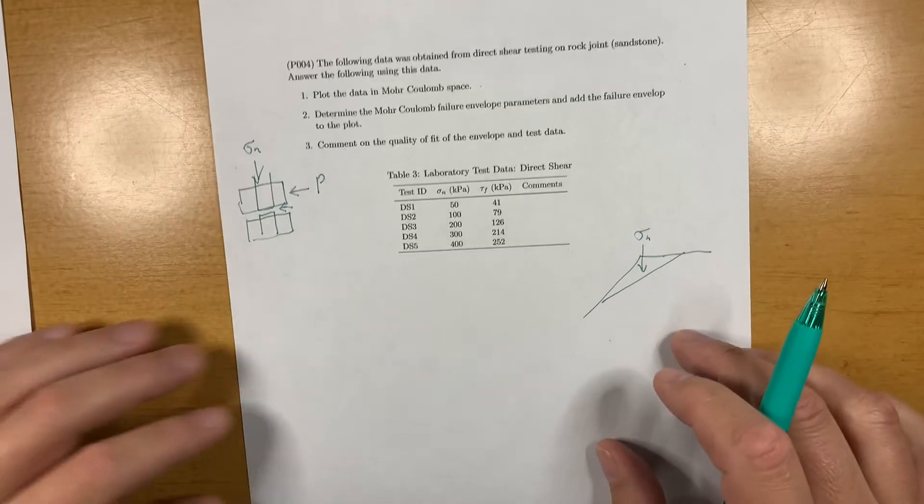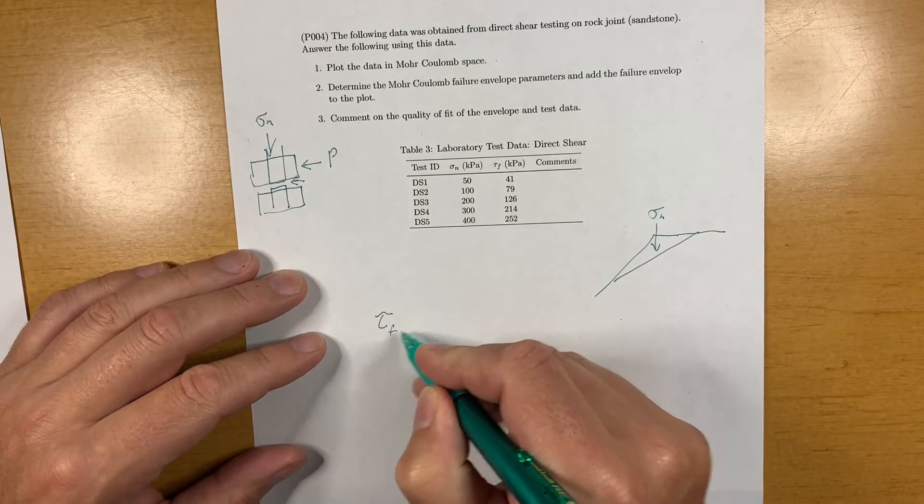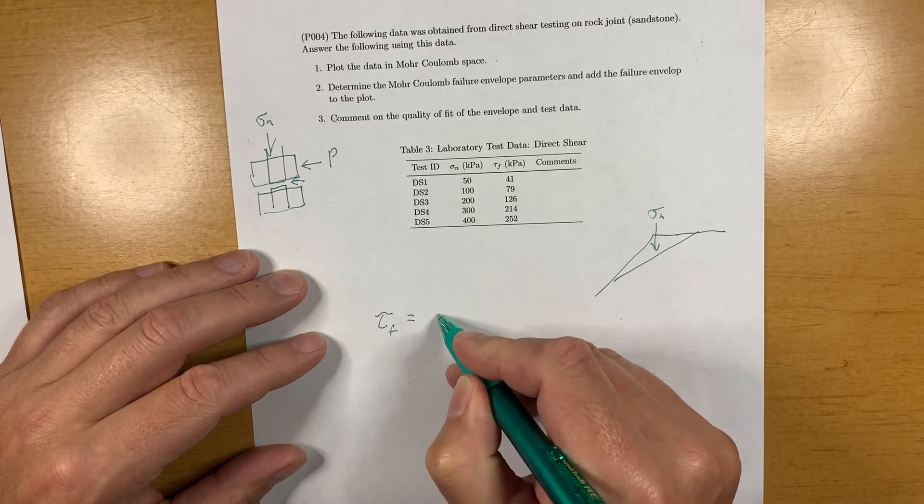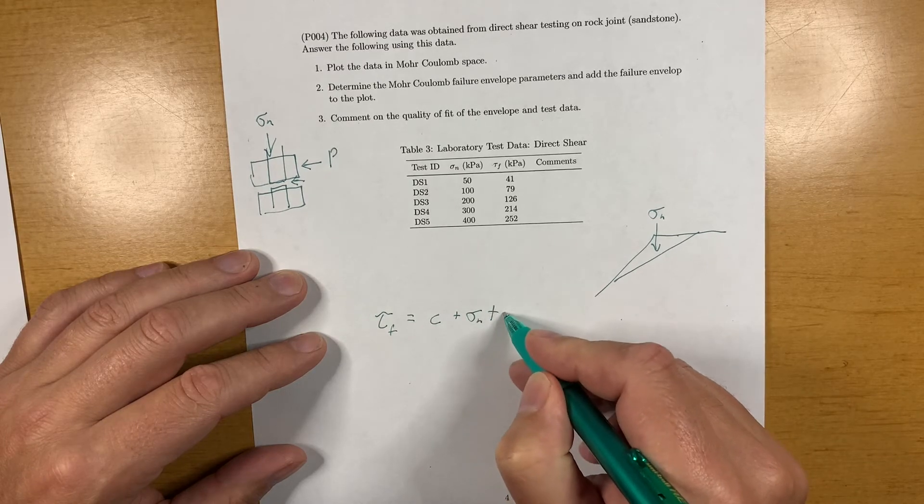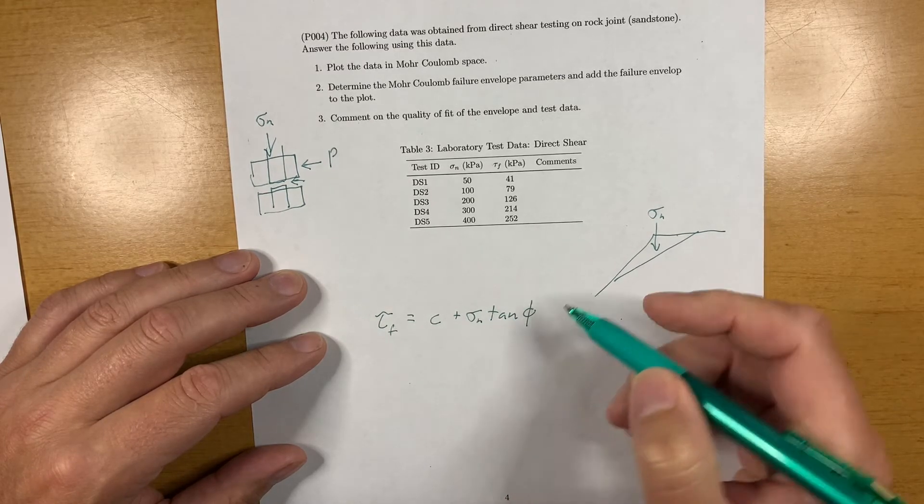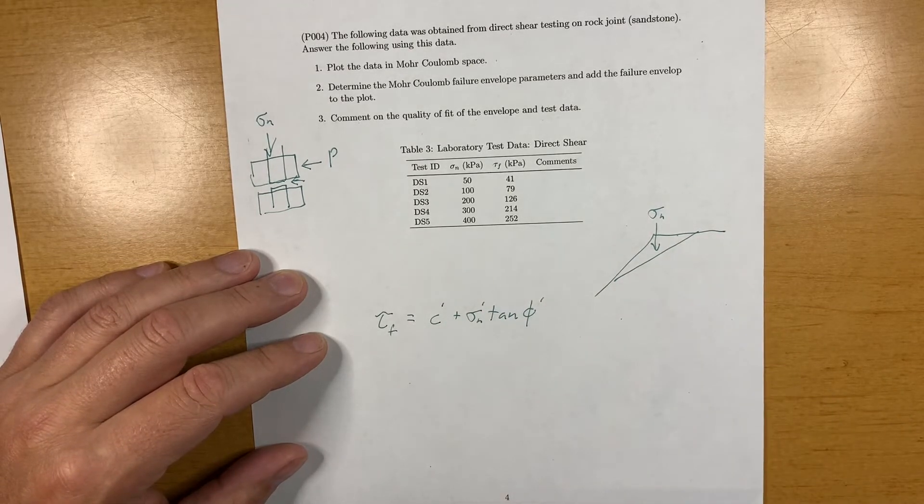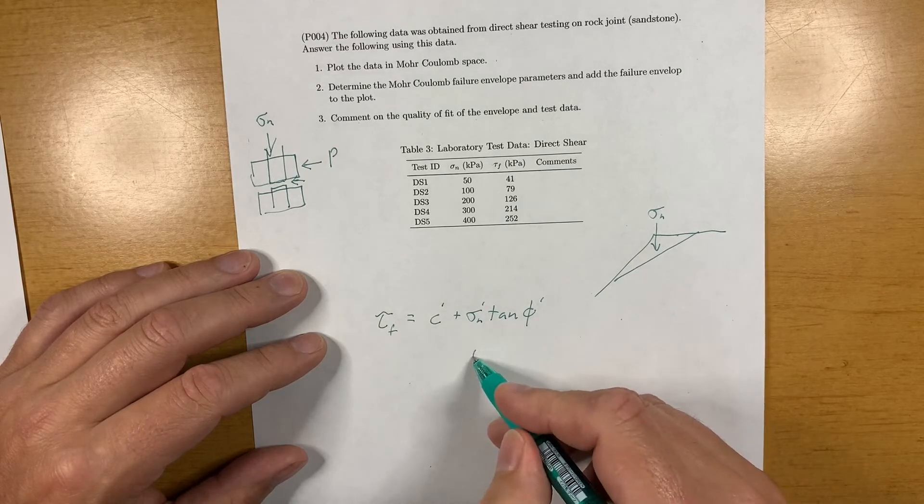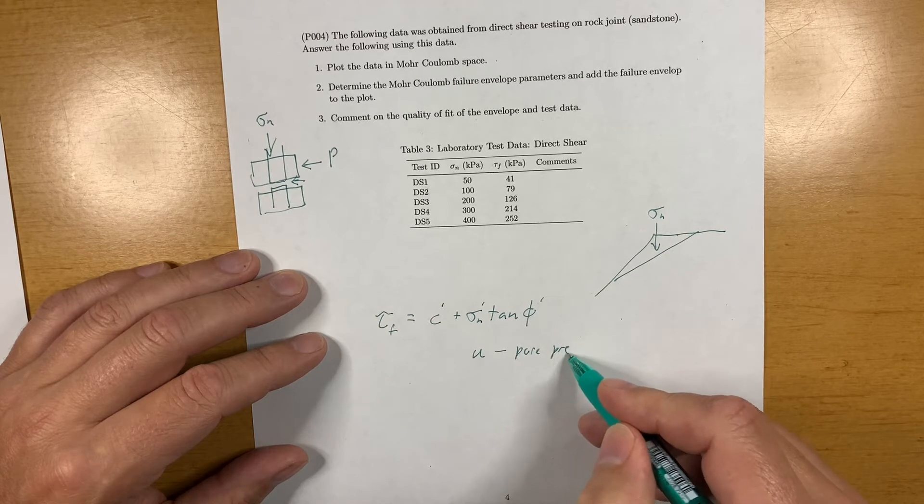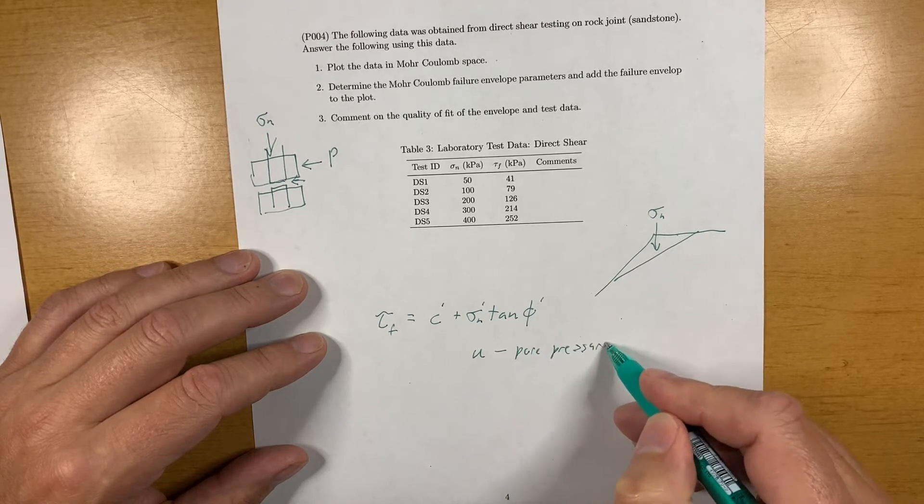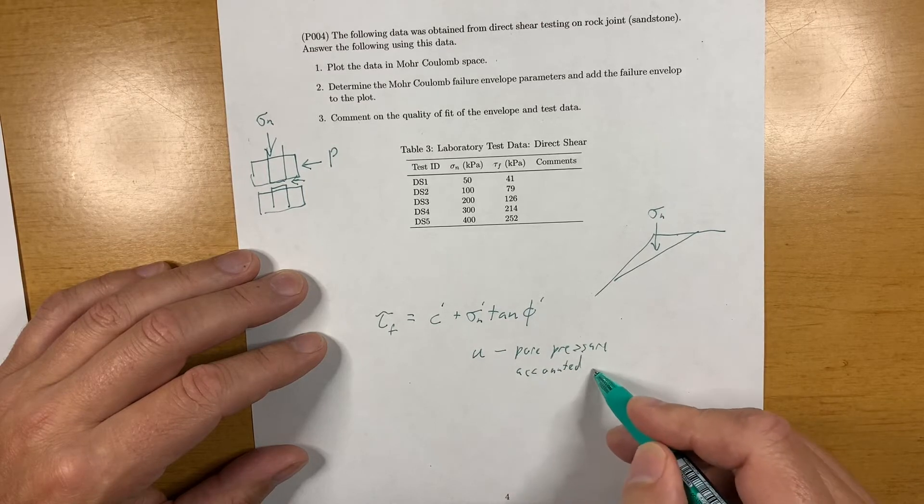So the Mohr-Coulomb criterion: we have tau of F is equal to C plus the normal stress tan of the friction angle. And these are effective stress parameters, so pore water pressure has to be accounted for.